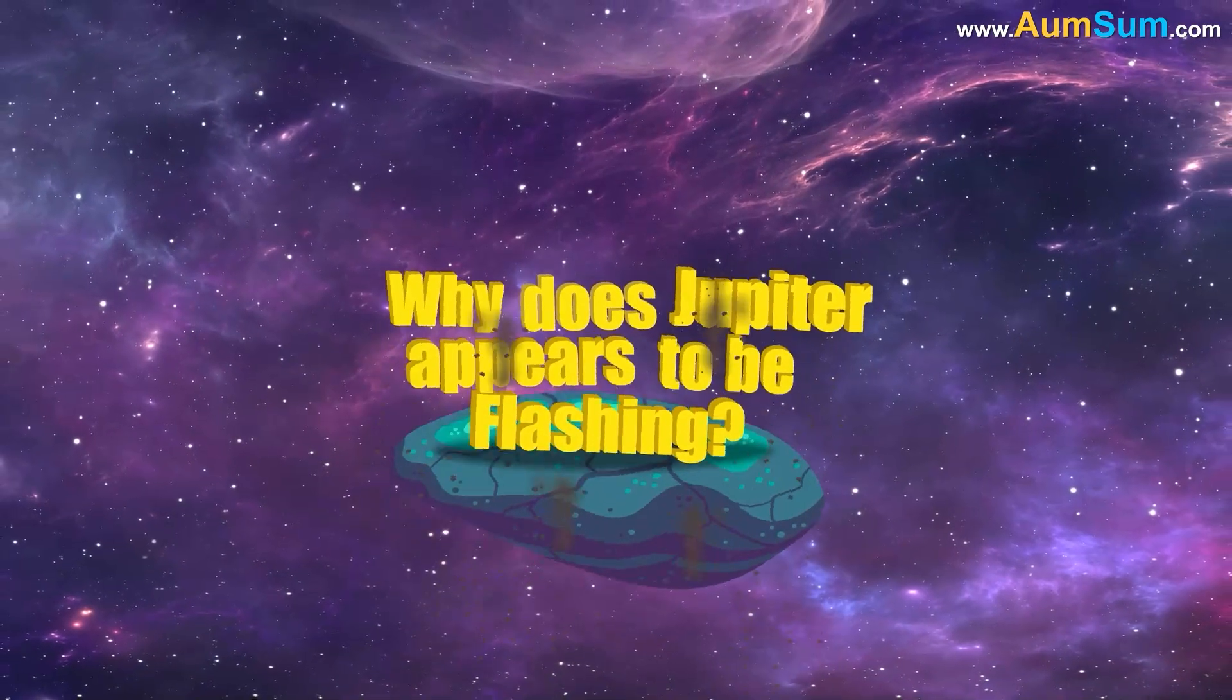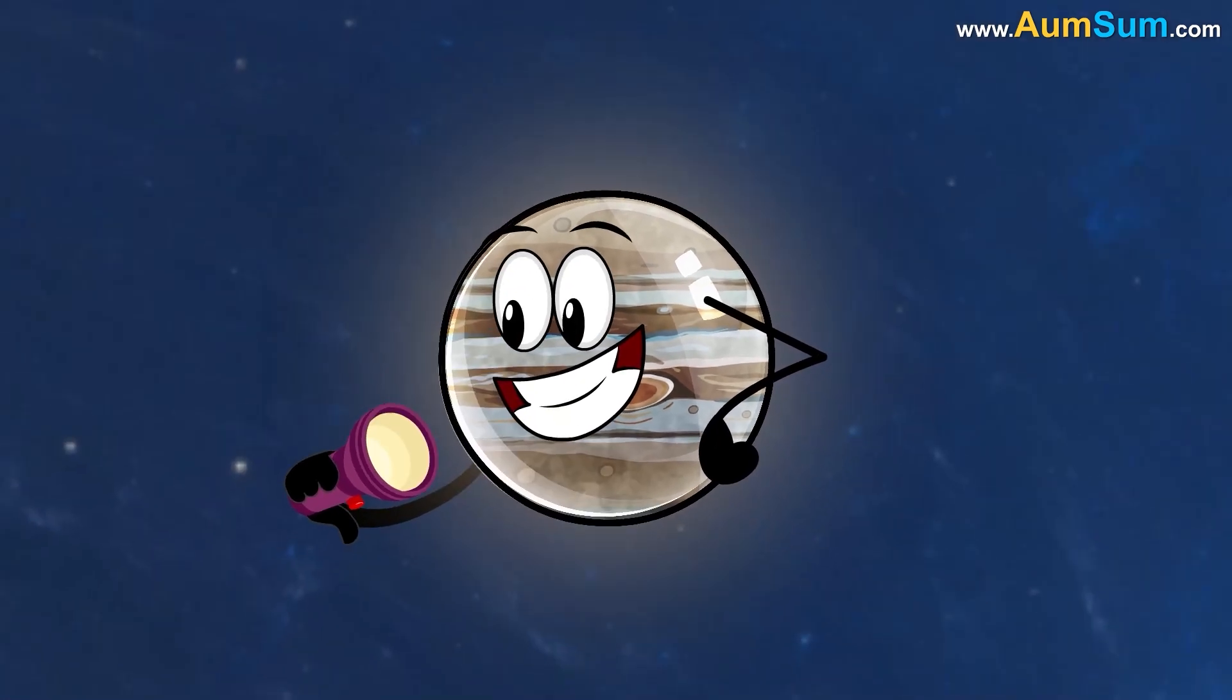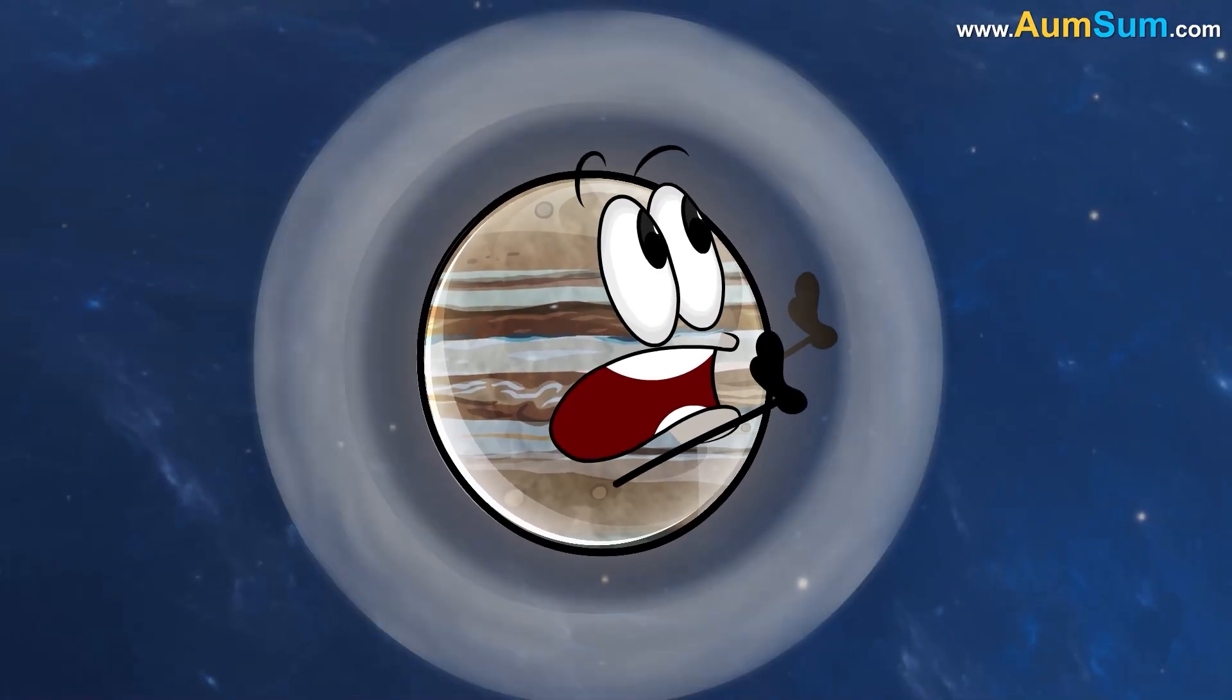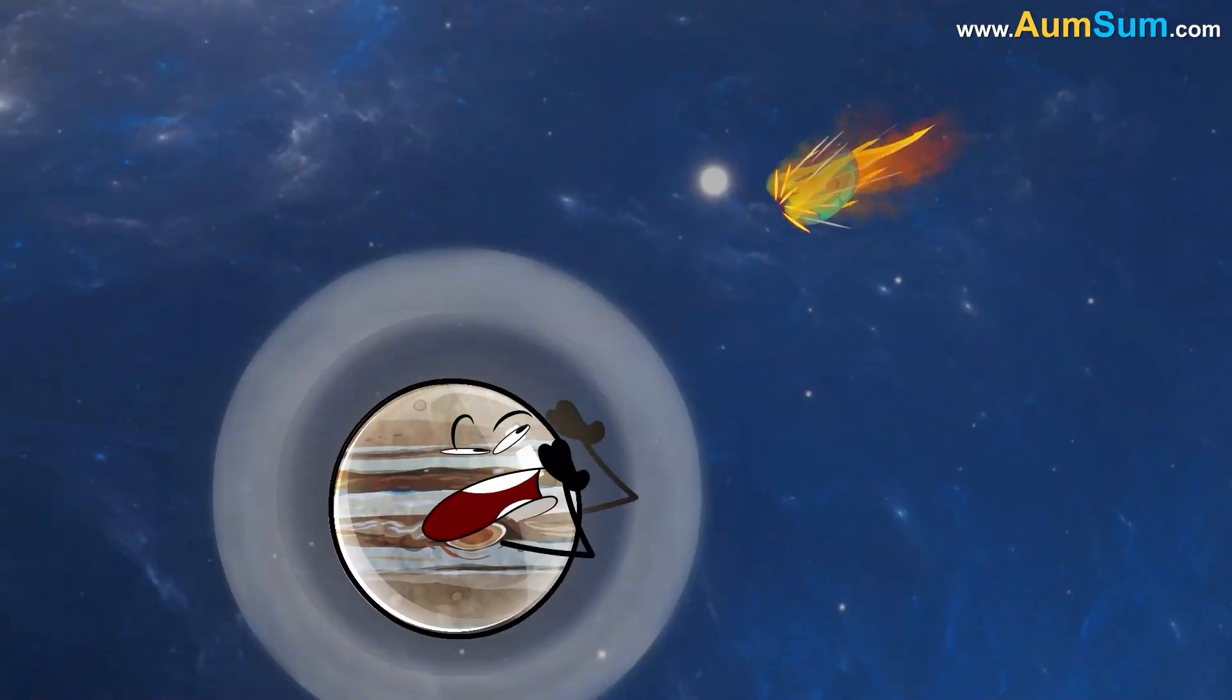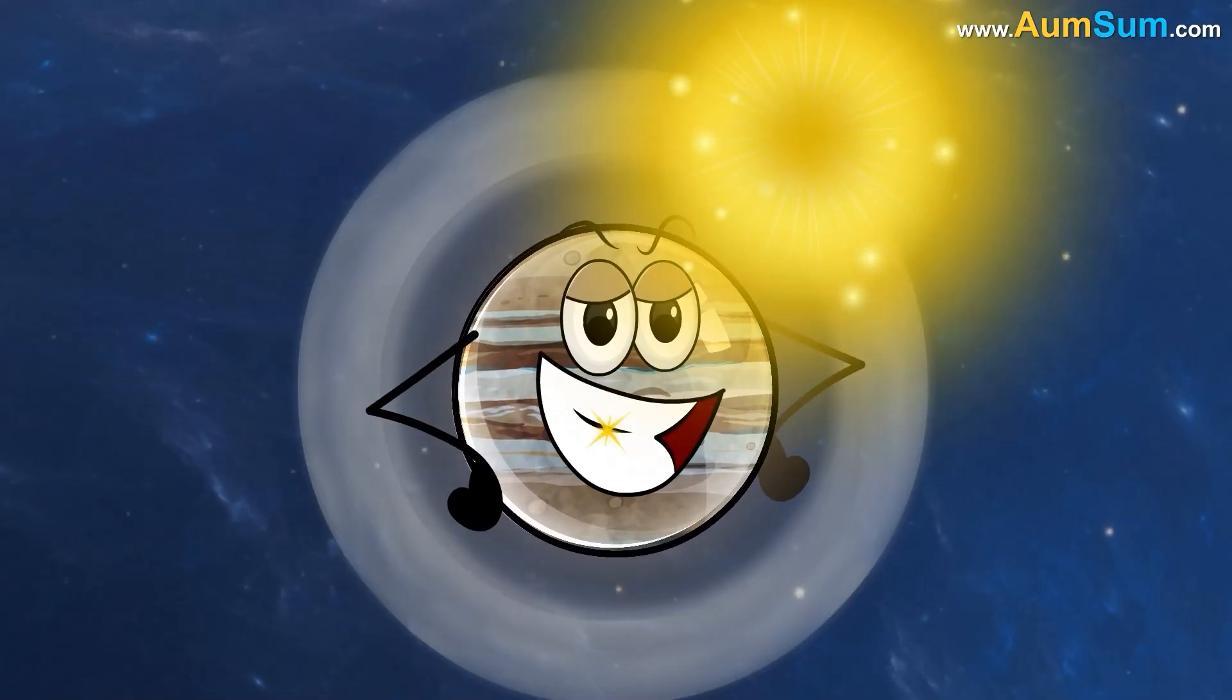Why does Jupiter appear to be flashing? Jupiter appears to be flashing because of the following reason. Usually when a small asteroid or comet collides with Jupiter's atmosphere, it burns up upon impact and creates a bright flash of light in the process.